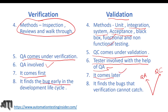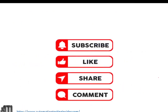Verification comes first, before validation. Verification finds bugs early in the development life cycle — for example, if a requirement is ambiguous or doesn't match customer needs, we can raise defects early. Validation happens after the product is built; during actual testing we mostly find functional and non-functional defects. That is the difference between verification and validation.